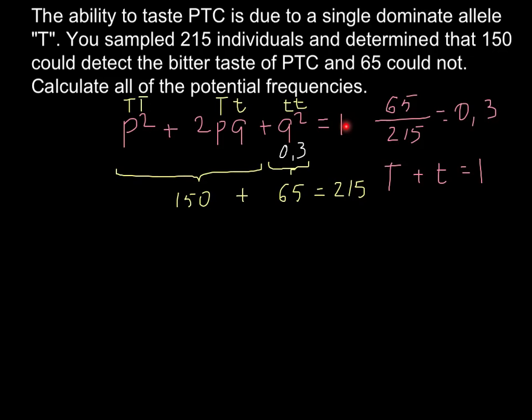So as long as we know q squared, that is 0.3, we can find what is q. And in order to find q, if we know that q squared equals to 0.3, we have to take a square root. So if we take square root on the left side, and if we take a square root on the right side, we are going to get 0.55. This is a rounded number.